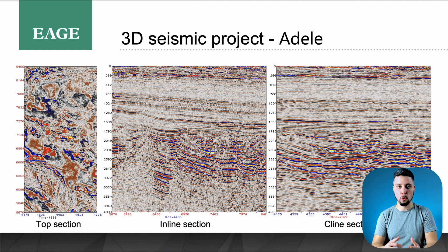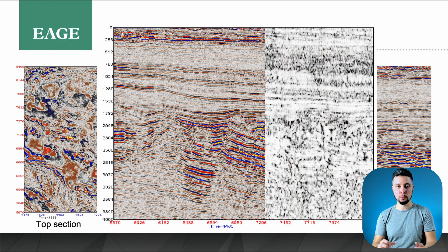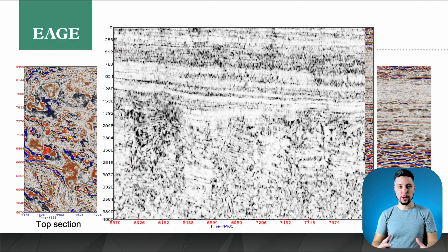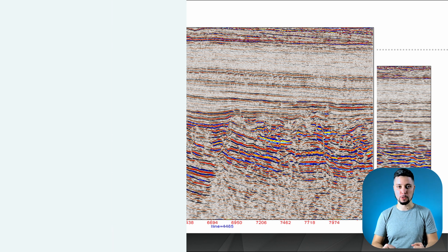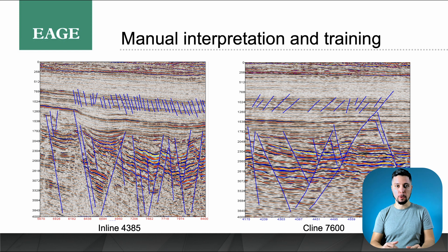We demonstrated the application of one-shot learning on the Adela field, northwest of Australia. This dataset was used in the first FORCE competition for fault detection. Looking at several sections of this dataset: in the inline section, we can see two distinct faulting systems — in the shallow part there are smaller connective faults, and in the deeper part there is a bigger regional fault. The deeper part has a relatively low signal-to-noise ratio, and coherency-based attributes provide only noisy pictures. To use one-shot learning, we supply one interpreted slice in each direction: an inline and a crossline, summing to two slices. We selected inline 4385 and crossline 7600 for training, and inline 4245 for validation.